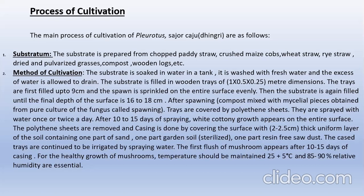After spawning — spawning means compost mixed with mycelial pieces obtained from the pure culture of the fungus — the trays are covered by polythene sheets. They are sprayed with water once or twice a day. After 10 to 15 days, white cottony growth appears on the entire surface. The polythene sheets are removed and casing is done by covering the surface with a 2 to 2.5 cm thick uniform layer of soil containing one part sand, one part sterilized garden soil, and one part resin-free sawdust. The cased trays are continued to be irrigated by spraying water. The first flush of mushroom appears after 10 to 15 days of casing. For healthy growth, temperature should be maintained at 25°C and 85 to 90 percent relative humidity are essential.